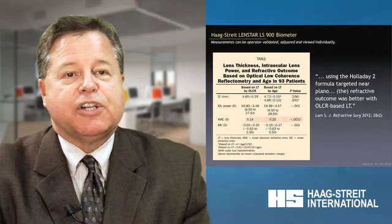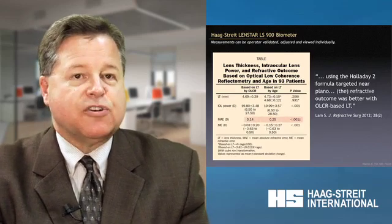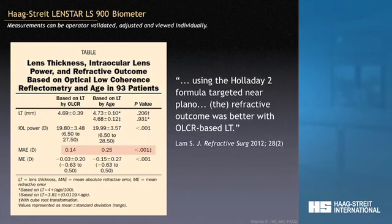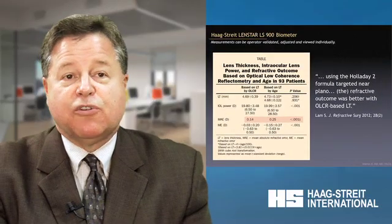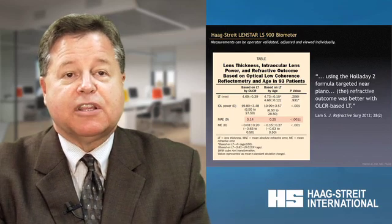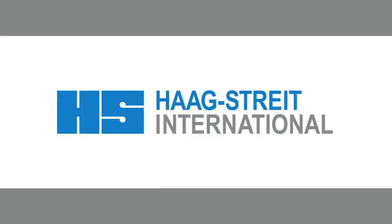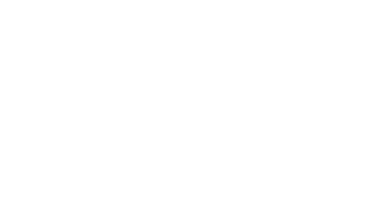Sheldon Lam in Lombard, Illinois recently published a paper in the Journal of Refractive Surgery showing that when we actually use the lens thickness in the Holladay II formula compared to age-based estimations of lens thickness, the refractive outcomes are statistically better. So I think this is proof that adding the lens thickness to the Holladay II formula — a measurement that's actually carried out — will enhance our refractive outcomes.